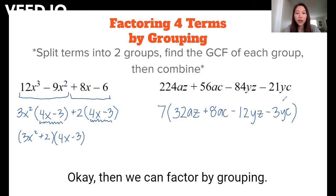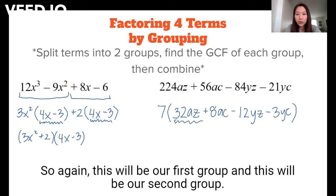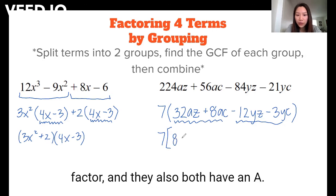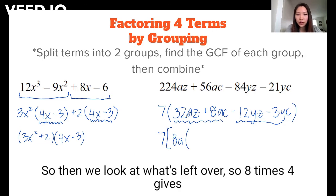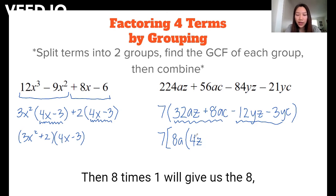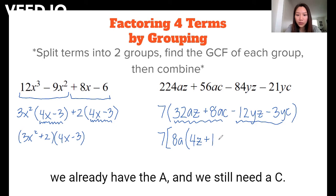Okay, then we can factor by grouping. So again, this will be our first group, and this will be our second group. So in our first group, we have an 8 as the greatest common factor, and they also both have an A. So then we look at what's left over. So 8 times 4 gives us 32, and A times Z gives us AZ. Then 8 times 1 will give us the 8. We already have the A, and we still need a C.